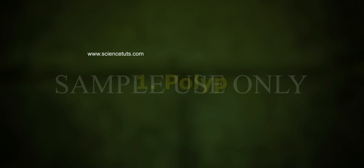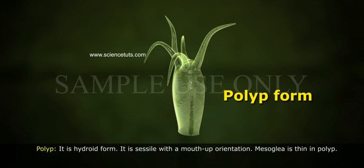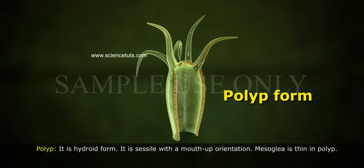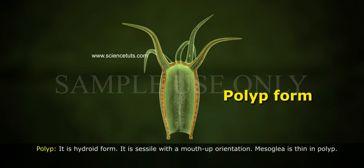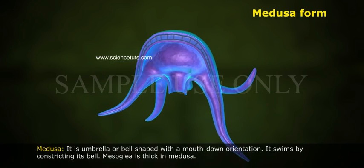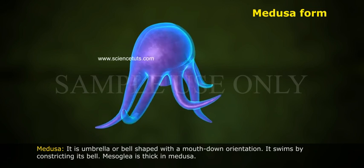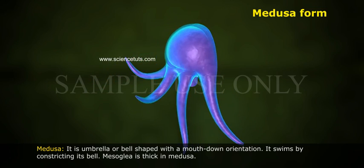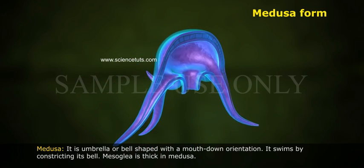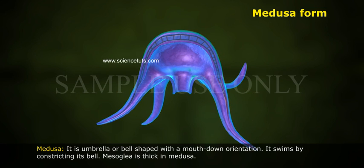Polyp: It is the hydroid form. It is sessile with a mouth-up orientation. Mesoglia is thin in polyp. Medusa: It is umbrella or bell-shaped with a mouth-down orientation. It swims by constricting its bell. Mesoglia is thick in medusa.